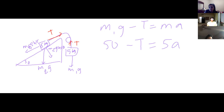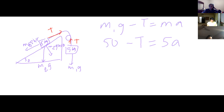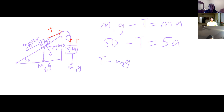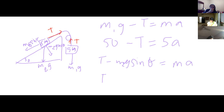For the other block on the incline, we have tension and then m2·g·sinθ. Since it's going up the incline, it's T minus m2·g·sinθ equals m2·a. So: T minus 40 equals 8a.